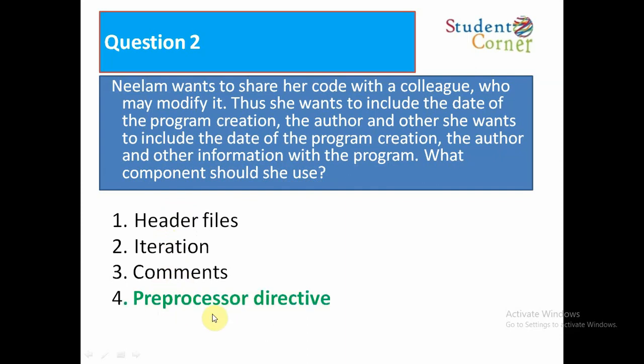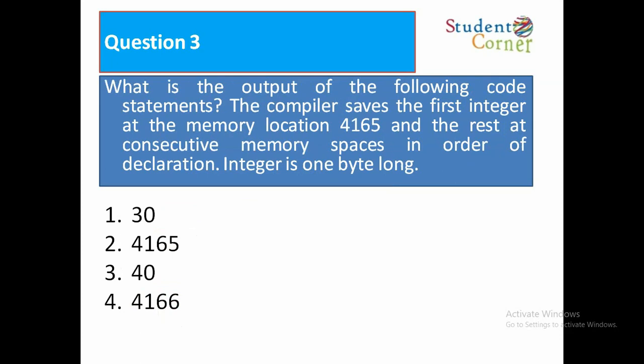What is the output of the following code statement? The compiler saves the first integer at memory location 4165 and the rest at consecutive memory spaces in order of declaration. Integer 1 byte long. Option 1: 30. Option 2: 4165. Option 3: 40. Option 4: 4166. The answer is 40.